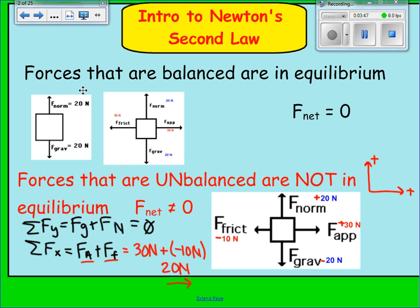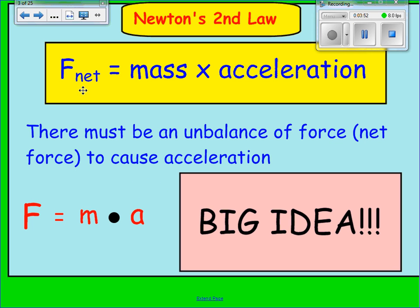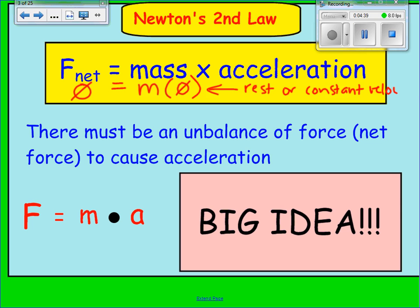That leads us to Newton's second law. Newton's second law is not so much words but a mathematical equation: the net force acting on an object in the x or y direction equals the object's mass times the object's acceleration. There must be an unbalanced force — a net force — to cause acceleration. In Unit 4, net force was always 0, so acceleration was also 0, which is why the object remained at rest or at constant velocity. Now we'll see objects actually accelerate — speed up or slow down.